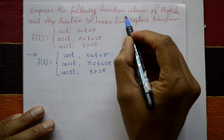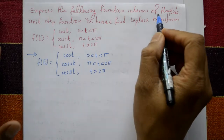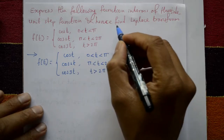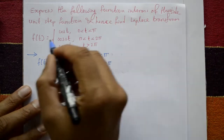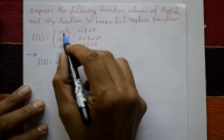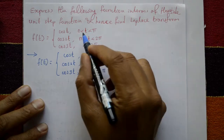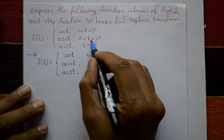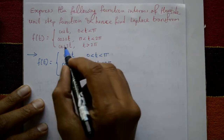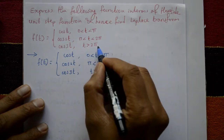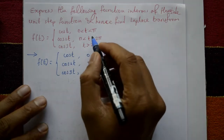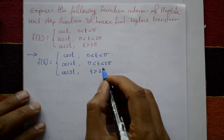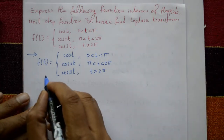Express the following function in terms of the Heaviside unit step function and hence find the Laplace transform. f(t) is given as: cos t for 0 < t < π, cos 2t for π < t < 2π, and cos 3t for t > 2π. This is a discontinuous function.